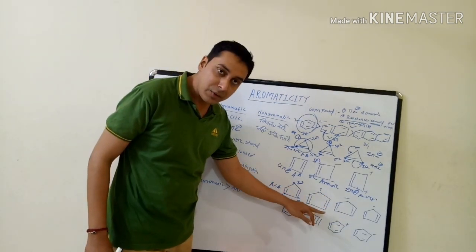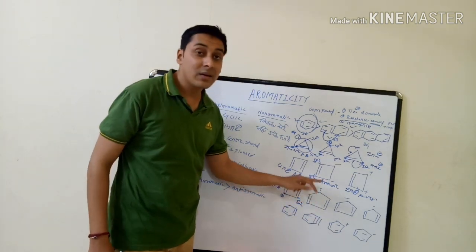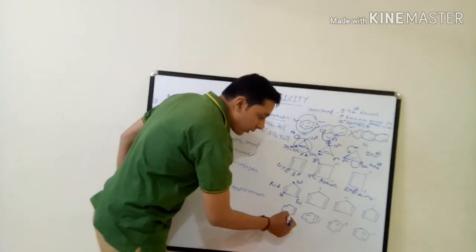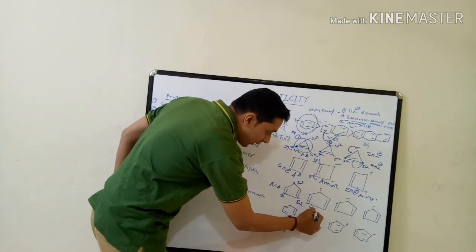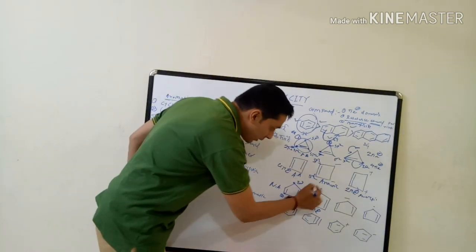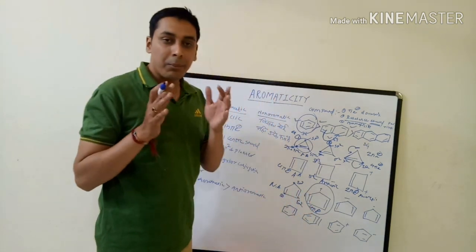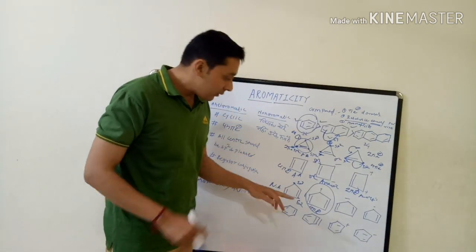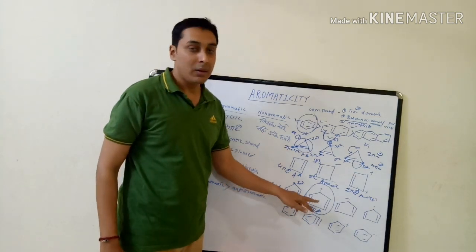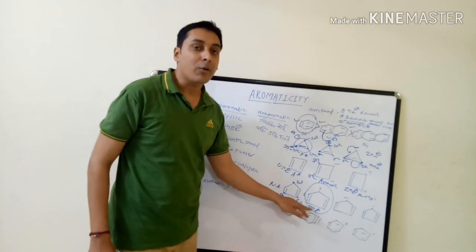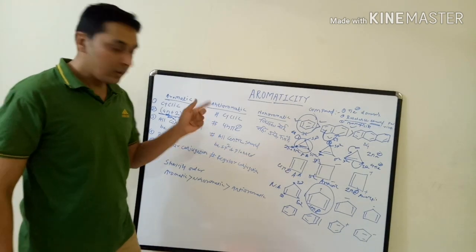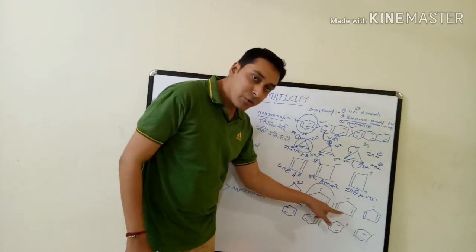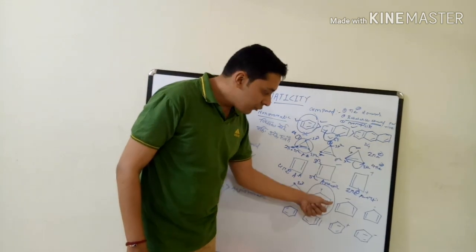Next five-membered example: all carbons including the top one are sp2-hybridized. The total number of pi electrons is four — the structure is cyclic, planar, in regular conjugation, and obeys the 4n rule — so this is an anti-aromatic compound.